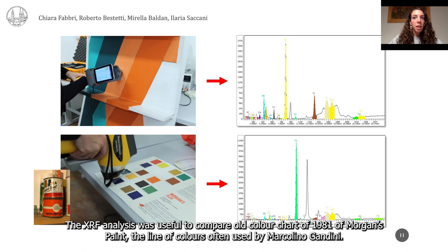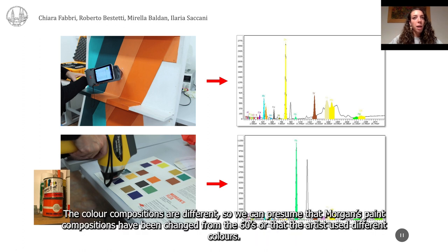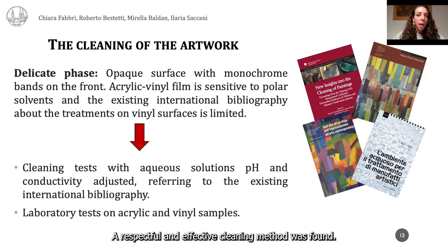The XRF analysis was useful to compare an old color chart from 1981 of Morgan's paint colors, a line often used by Marcolino Gandini. The color compositions are different, so we can presume that Morgan's paint compositions had changed since the 1960s, or that the artist used different colors.